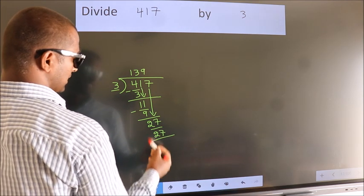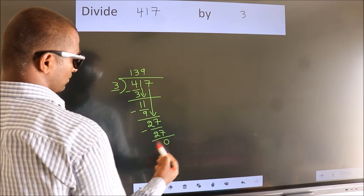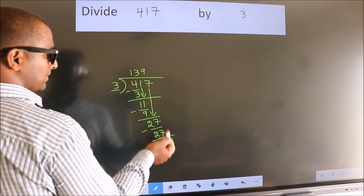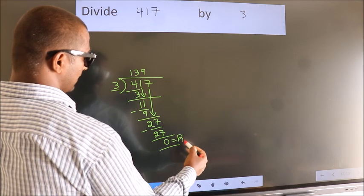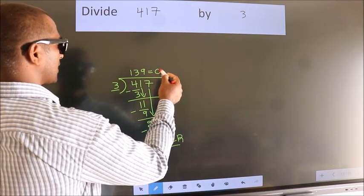Now we subtract. We get 0. No more numbers to bring it down. So we stop here. This is our remainder. This is our quotient.